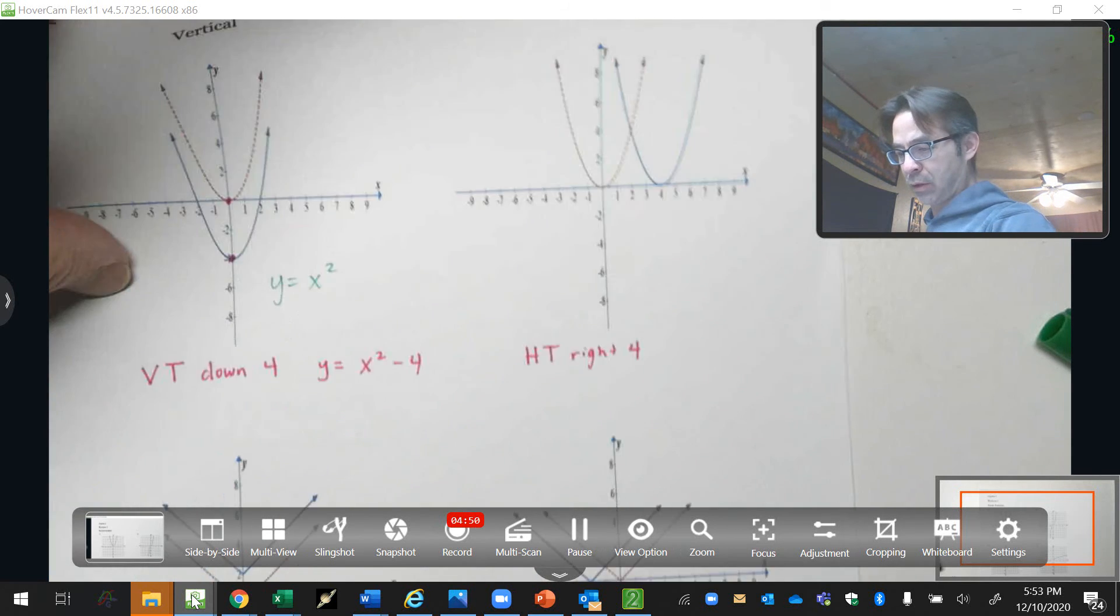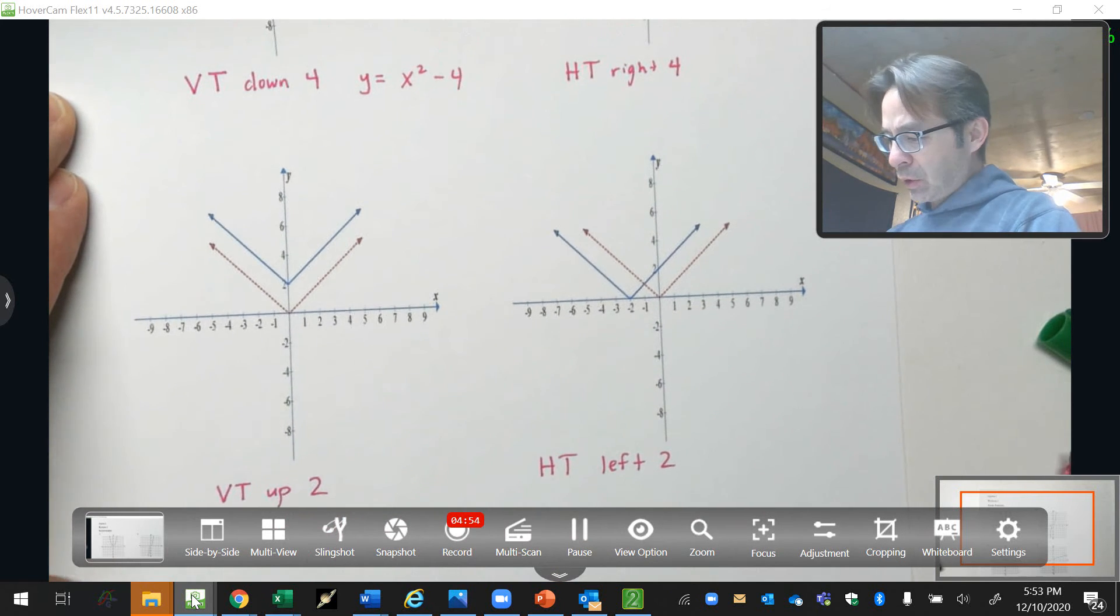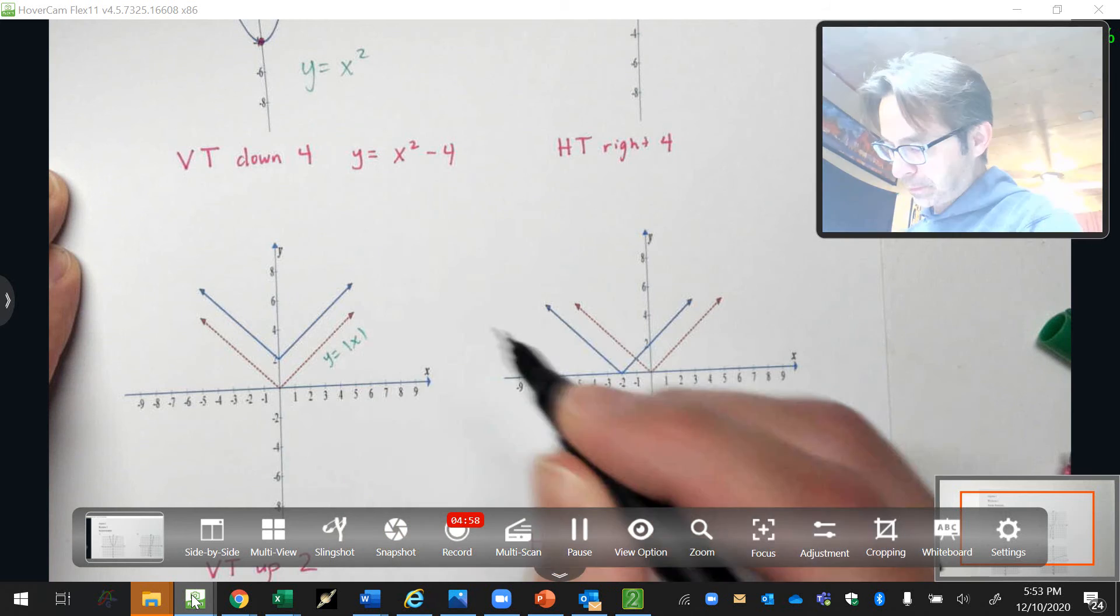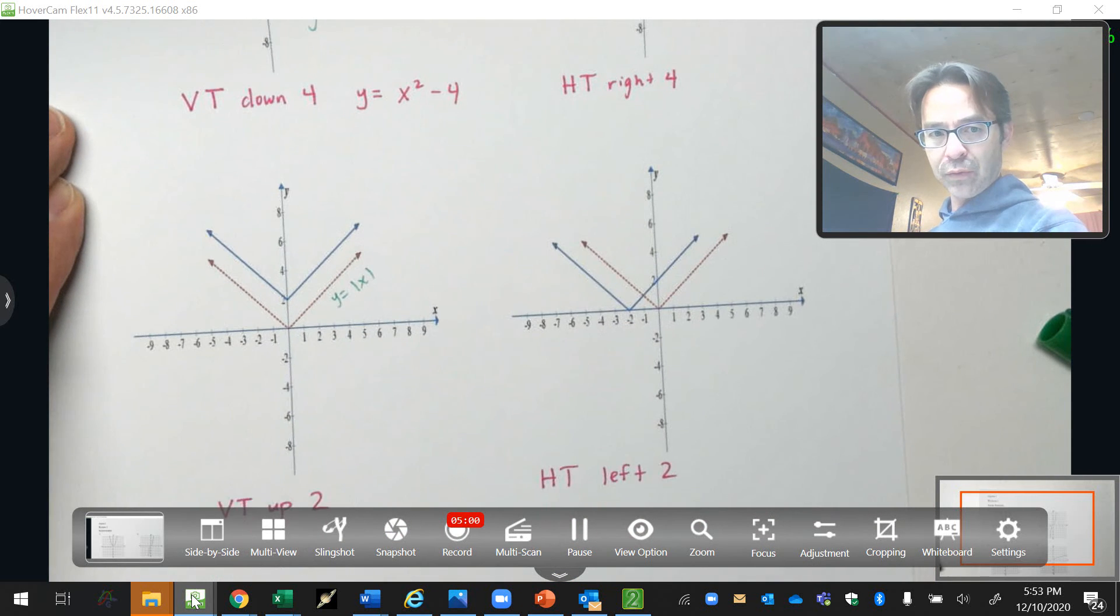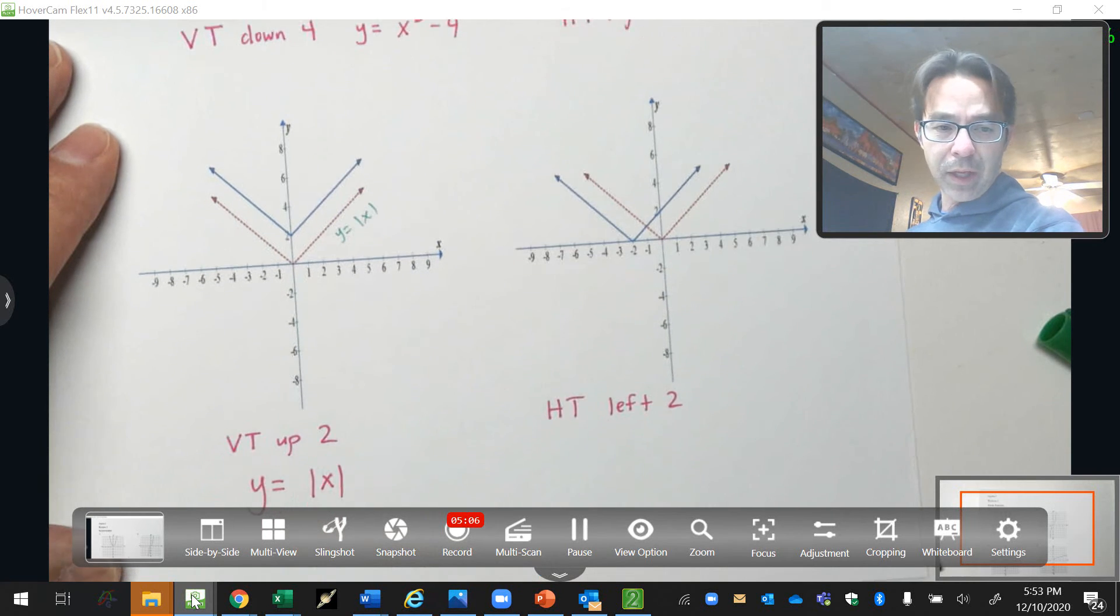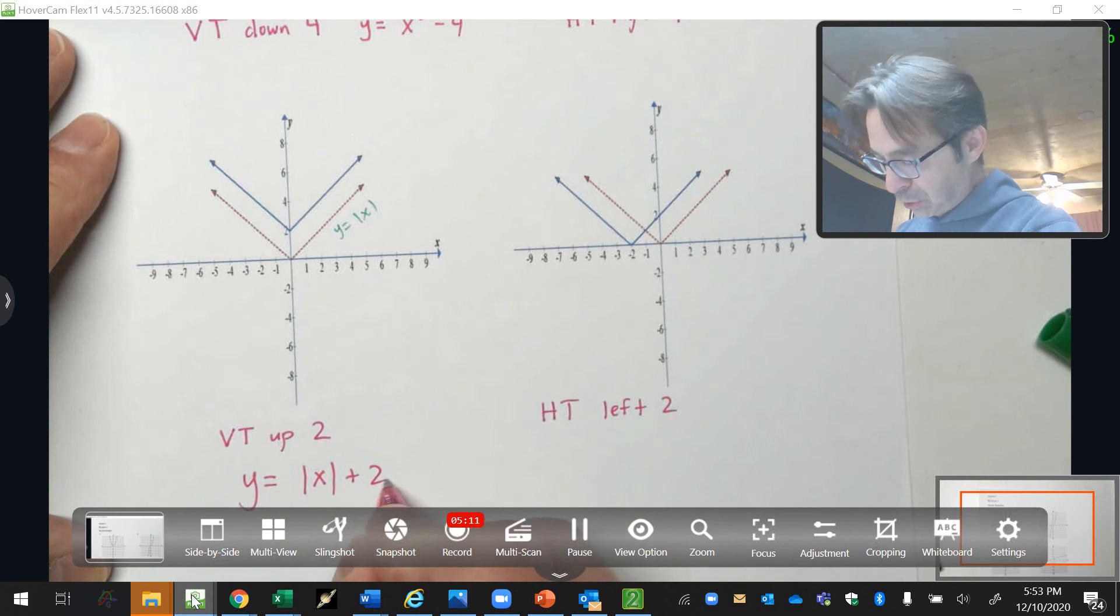On this one, the original function is absolute value function. So, the new function is the absolute value function. But it moved up two, up two.